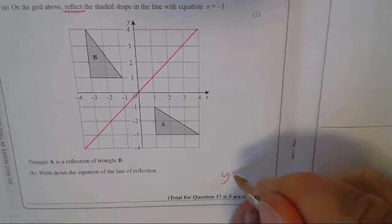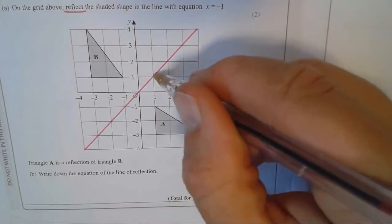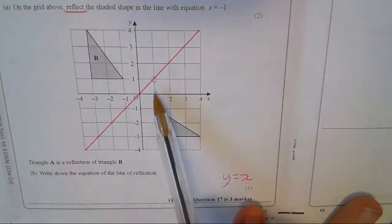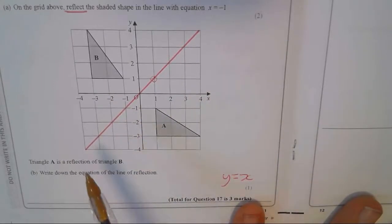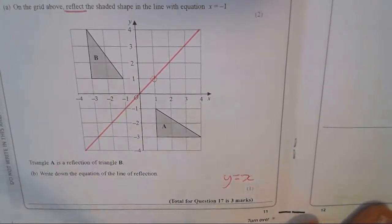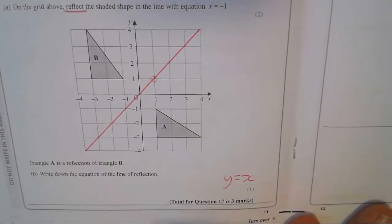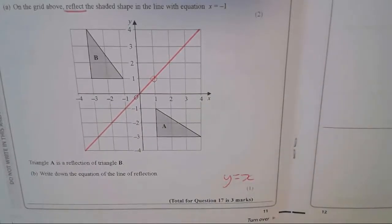That's the line y equals x. The y amount equals the x amount. Look, when x is 1, y is 1. When x is 2, y is 2. When x is minus 3, y is minus 3. That's the line y equals x. Or x equals y, but we tend to write it y equals x.